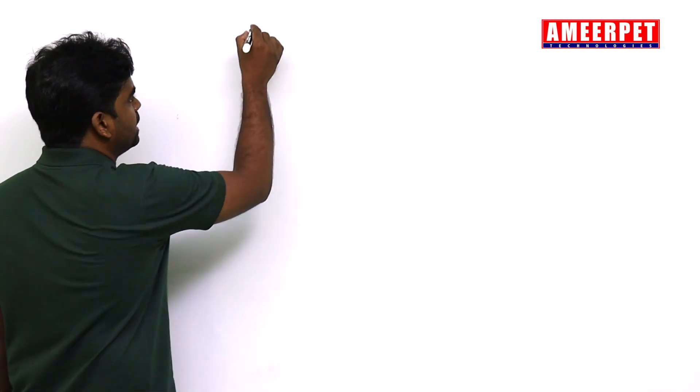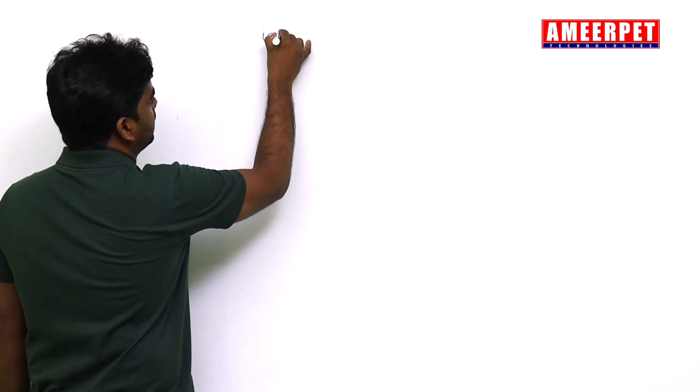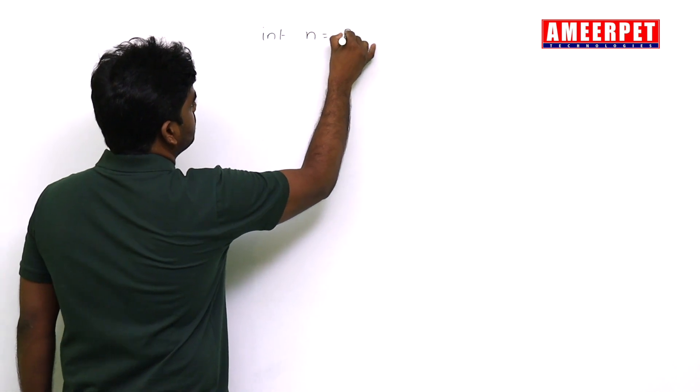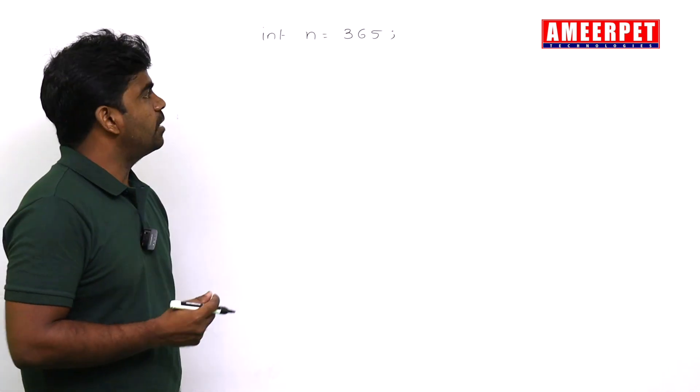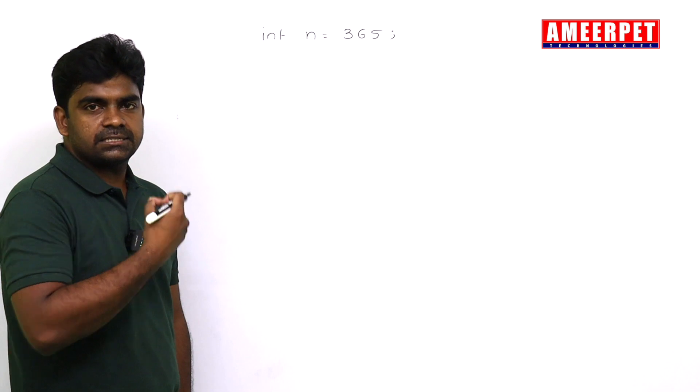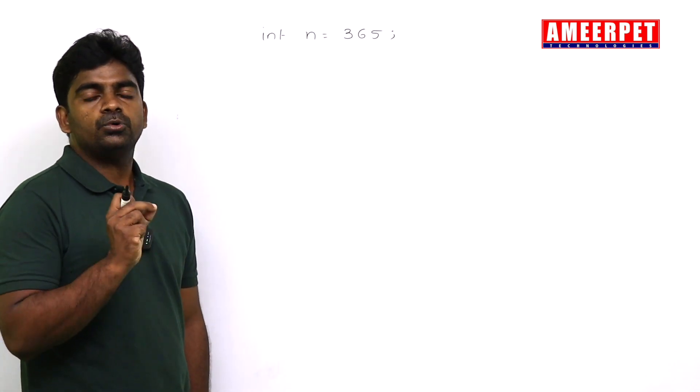But if you want to know while loop programs perfectly, two simple things everyone should understand. So what are the two simple things? Suppose if there is one number, int n equals 365. The two simple points: how to get the last digit from the given number and how to remove the last digit from the given number.